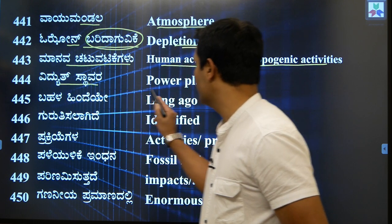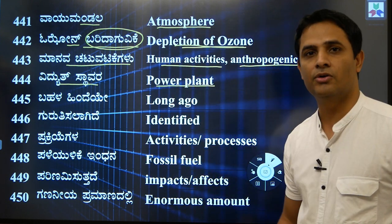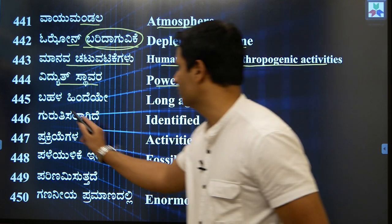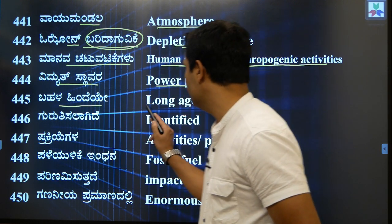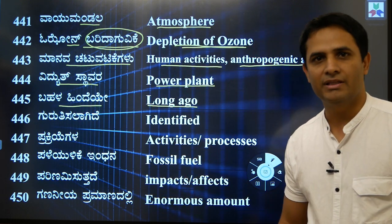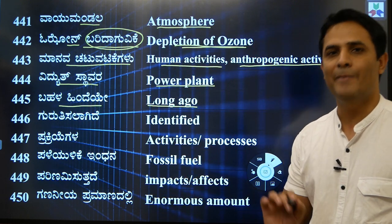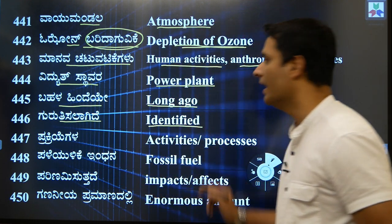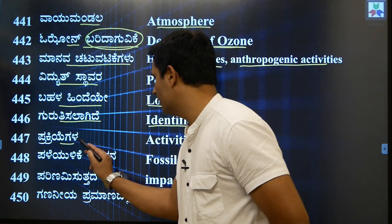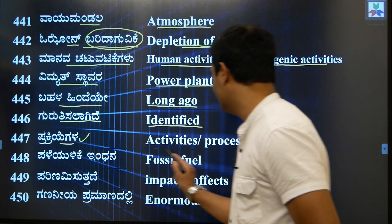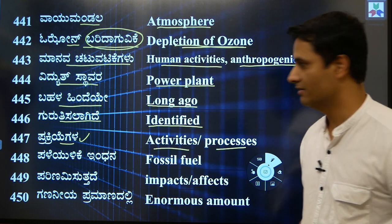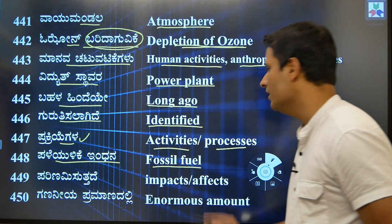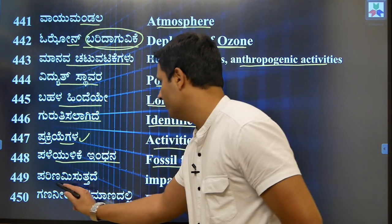'Vidyut sthavarana' — we call it 'power plant' or 'electricity plant'. 'Bahala hinde' means 'long ago' or 'long back'. 'Guruthisa lagide' means 'identified', and 'prakriyagalu' means 'activities'. 'Palivike' means 'fossil fuel'.